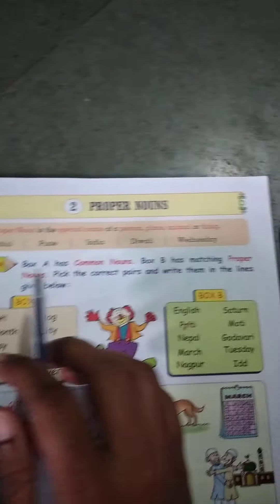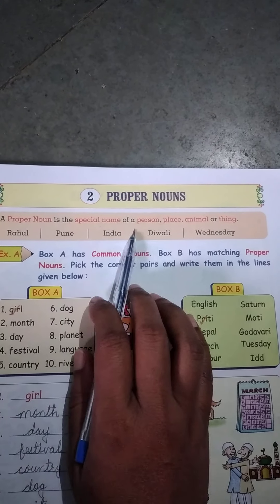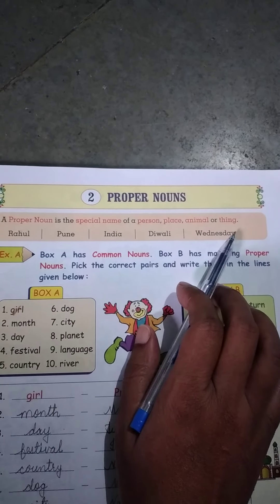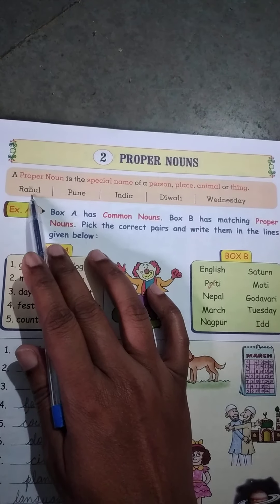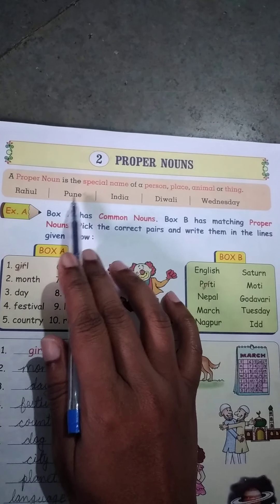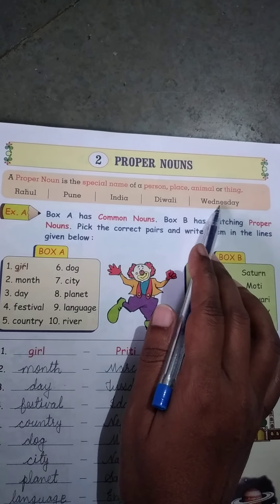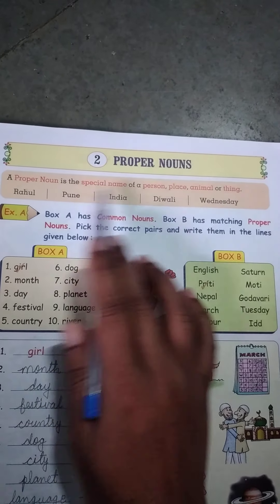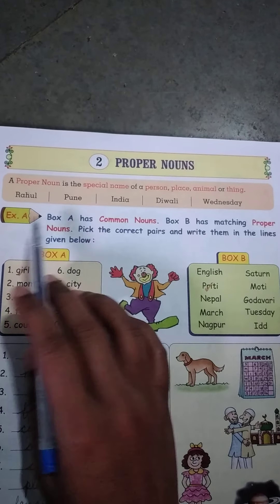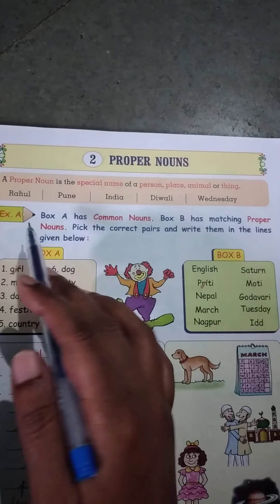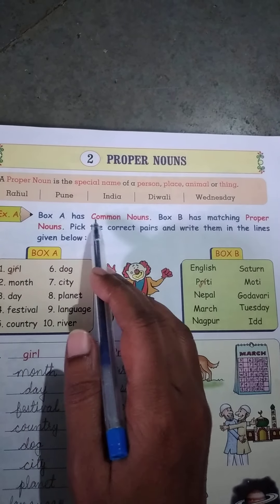Now we have the proper names of animals. Proper names of animals means some animals we keep as a pet in our house — animals like dog, cat, or cow. With love, we give them names. For example, a dog we might call Moti or Tuffy, and a cat we might call Money or Kitty. So we have proper names of animals.